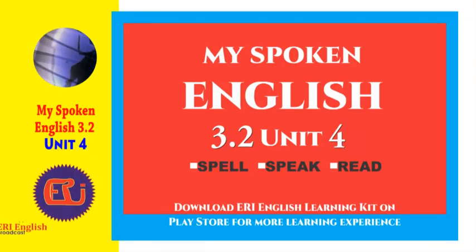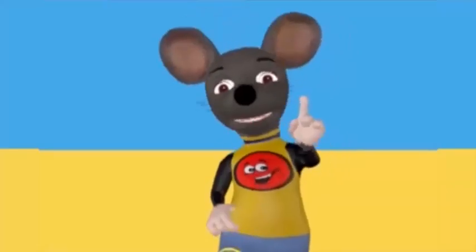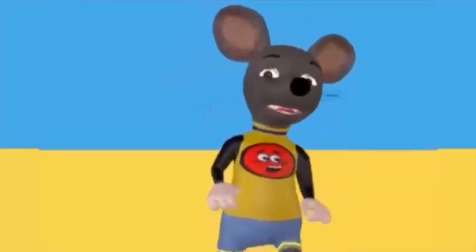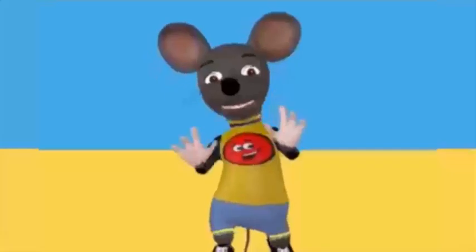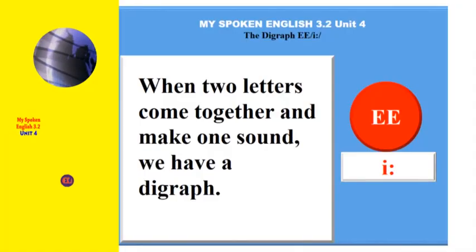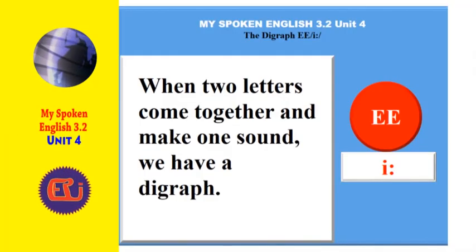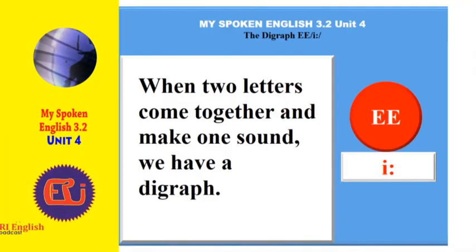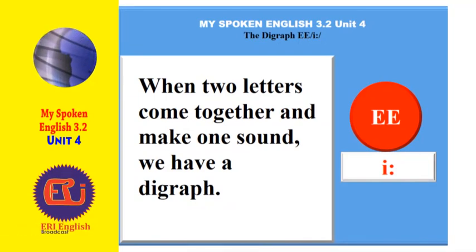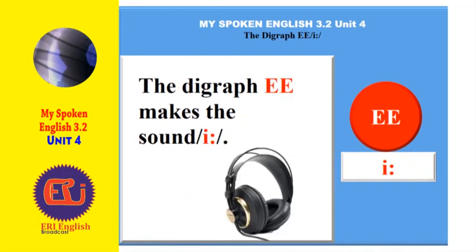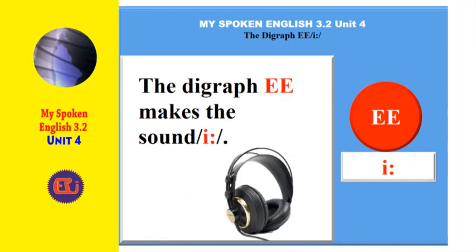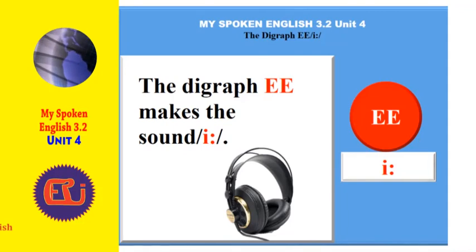My Spoken English 3.2, Unit 4: Speak the English the world understands — The Digraph EE. When two letters come together and make one sound, we have a digraph. The digraph EE makes the sound EEE.